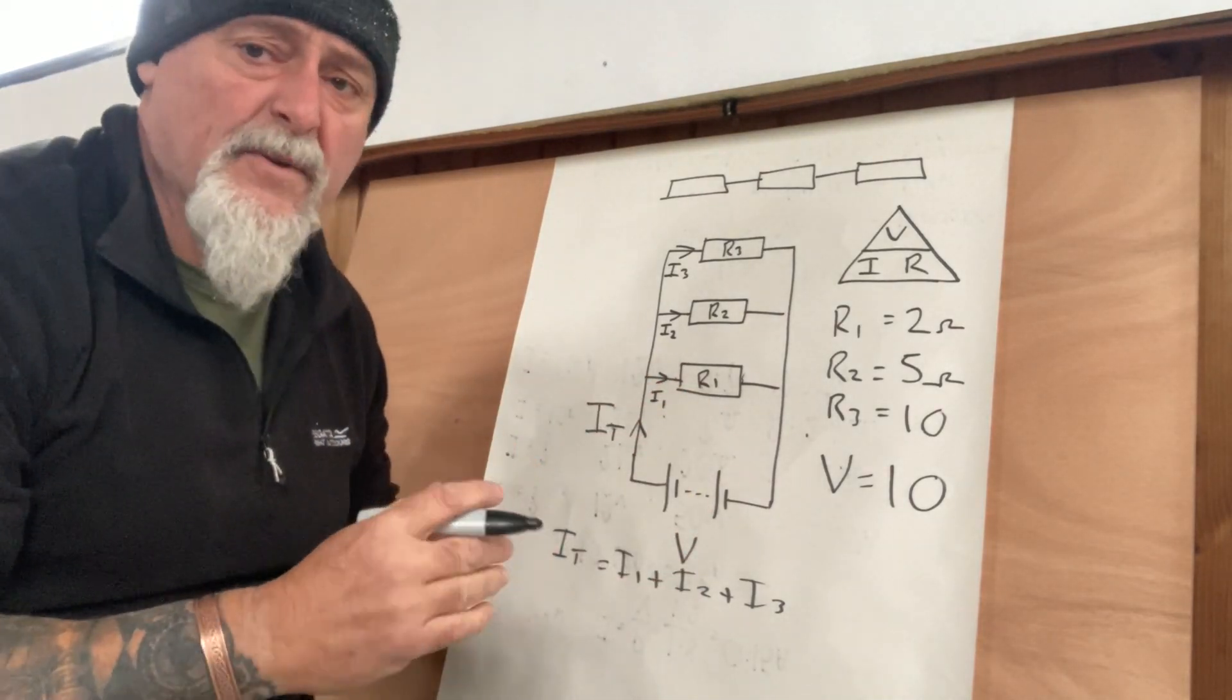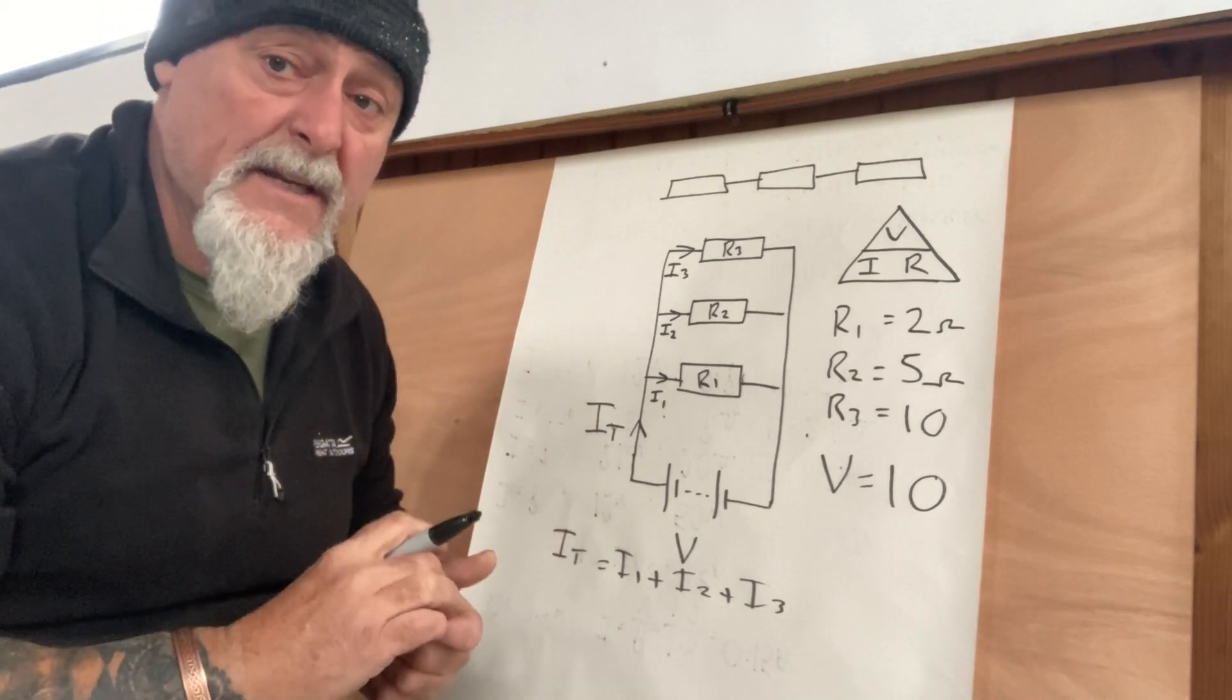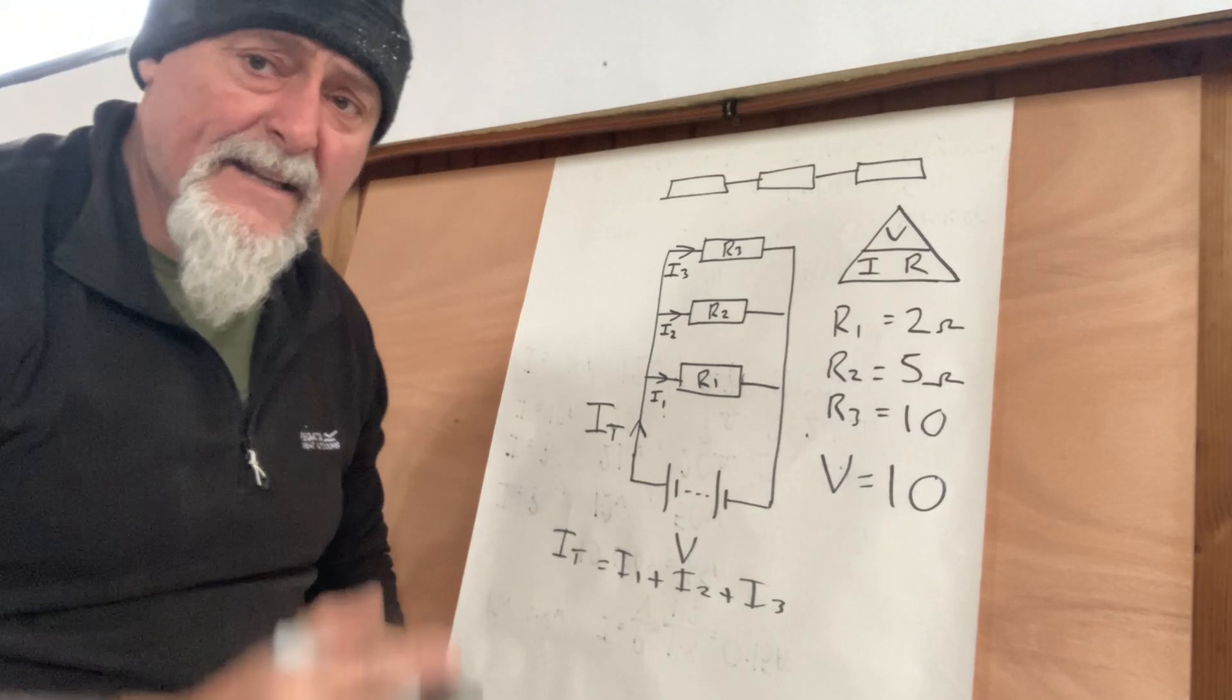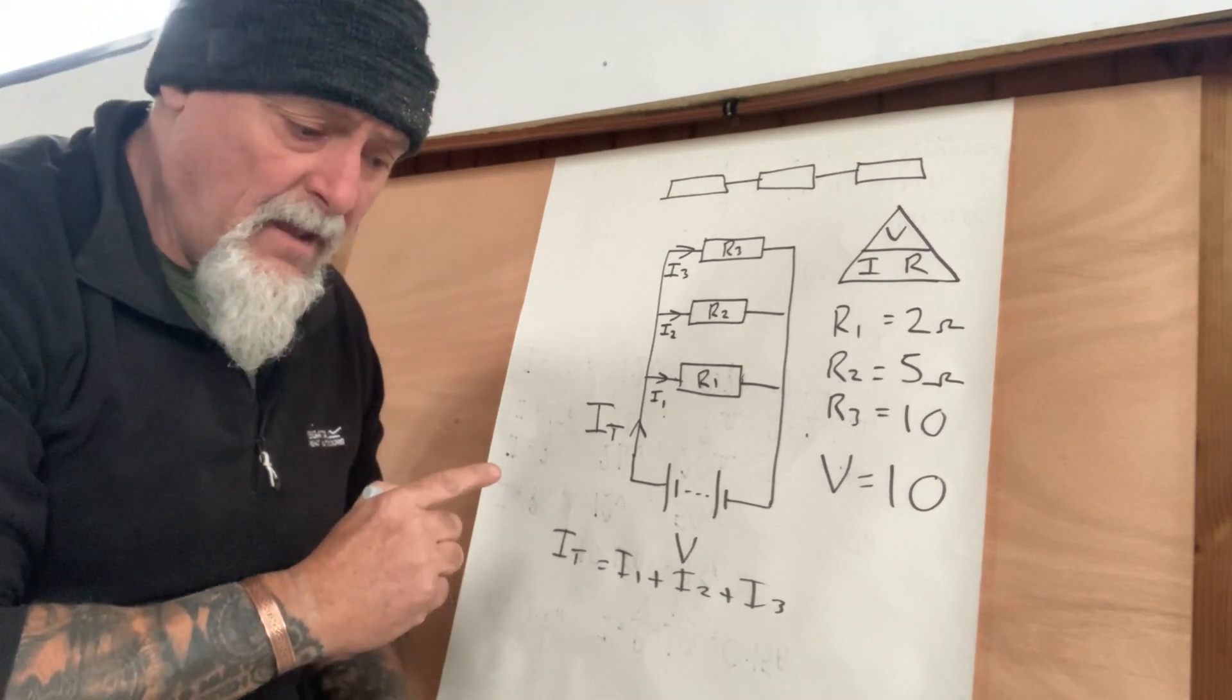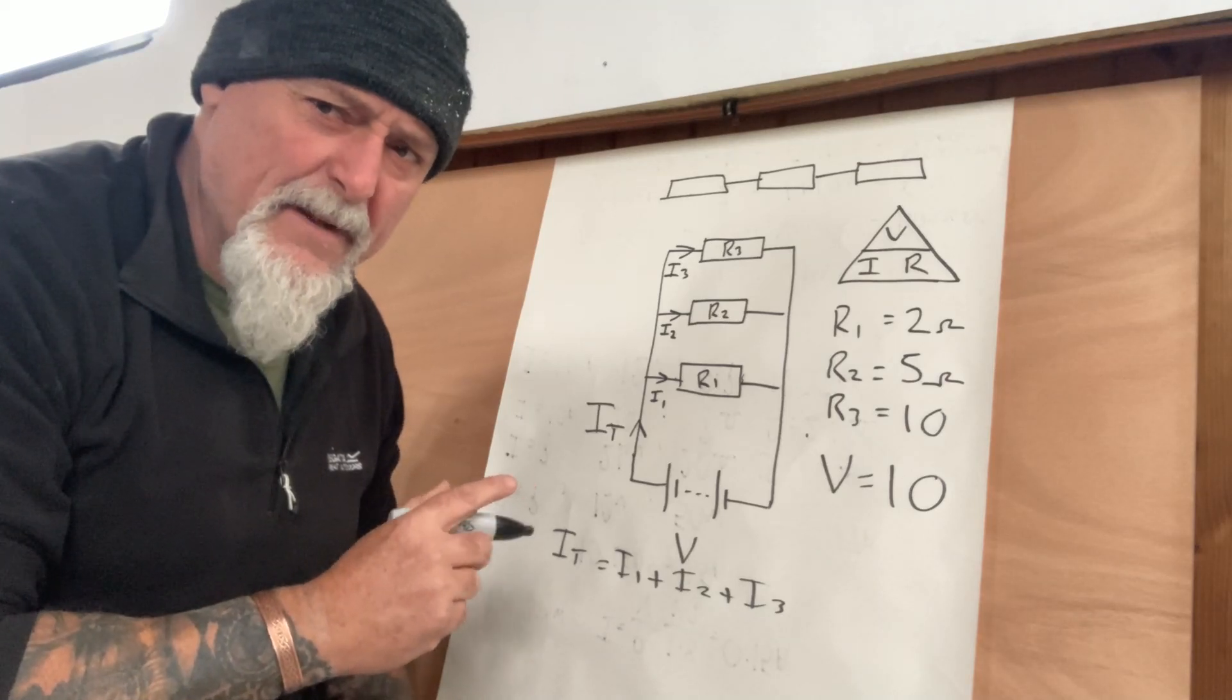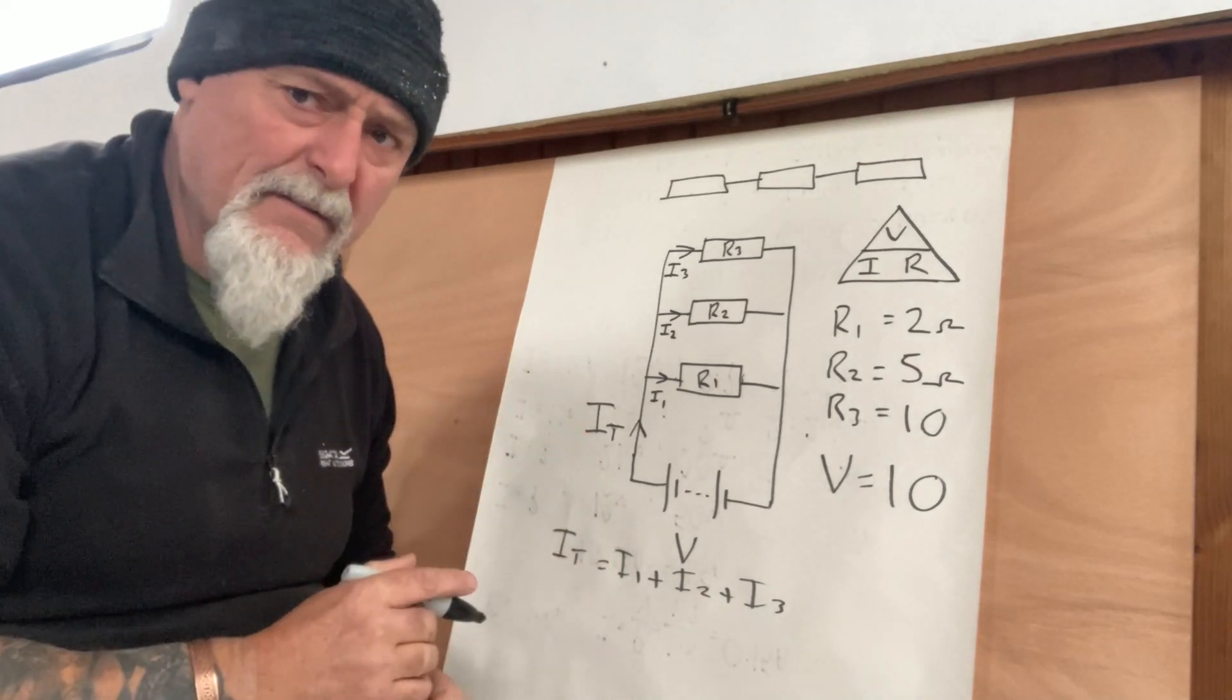If you put the easy numbers in, it sort of gets your head around it. Okay, I can see that. And when you start to put the more real-world numbers in, it makes a bit more sense to you. So let's go on and solve this circuit, and then it'll make our lives a lot easier. I think we'd be able to understand what's going on in a parallel circuit.